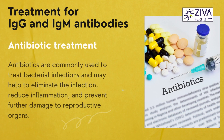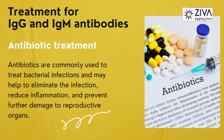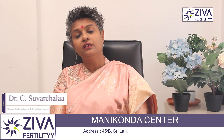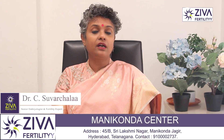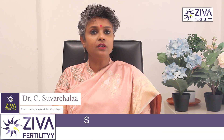Antibiotic treatment: if the presence of IgG or IgM antibodies is indicative of an active bacterial infection such as sexually transmitted infections, then antibiotic treatment may be recommended. Antibiotics are commonly used to treat bacterial infections and may help to eliminate the infection, reduce inflammation, and prevent further damage to reproductive organs. Properly treating the underlying infection can potentially improve fertility outcomes.